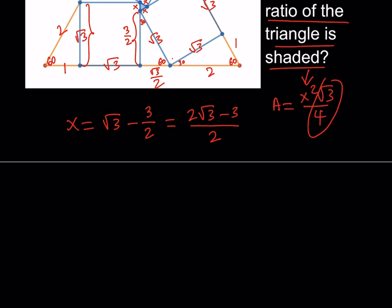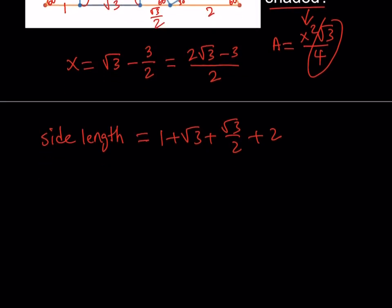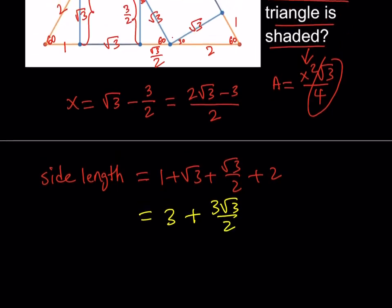Let's go ahead and write that down. The side length for the big triangle is going to be 1 plus root 3 plus root 3 over 2 plus 2. Now, what are we going to do? We're going to go ahead and simplify this. 1 plus 2 can be added, that's going to give us a 3. And these two can be added as well, and that's going to give us 3 root 3 over 2. So that's my side length for the large triangle. And for the small one, it's this one.